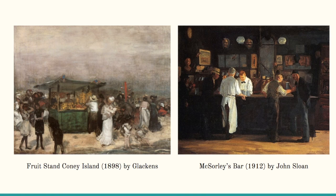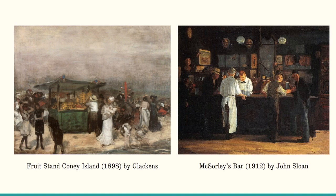Here are two paintings that are considered part of American realism. The first is 'A Fruit Stand at Coney Island' by a painter named Clackens, and the second is 'McSorley's Bar' by John Sloan. Both of these paintings don't really attend to the worlds of wealthy and idealistic spaces, but rather we have a fruit stand and a bar — places of everyday lives. Similarly, we have the rise of photography at the beginning of the 20th century. These two photographs are also considered part of American realism: 'Winter, Fifth Avenue' by Alfred Stieglitz — who just so happens to be the husband of Georgia O'Keeffe — and 'The Bandit Roof' by Reese. Both of these are not idealized images at all; they're kind of rough around the edges but true to what life was like for many people at the beginning of the 20th century.